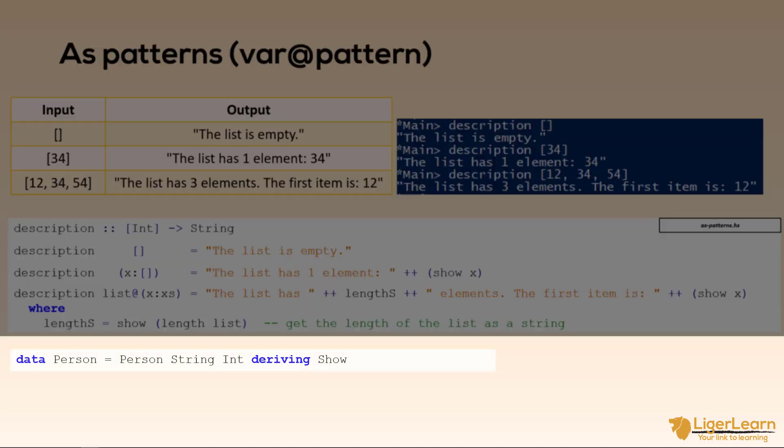Let's do a similar exercise for a custom algebraic data type that we will call person. The person contains two data values within it. One string which is supposed to be the person's name and one int which is supposed to be the person's age.